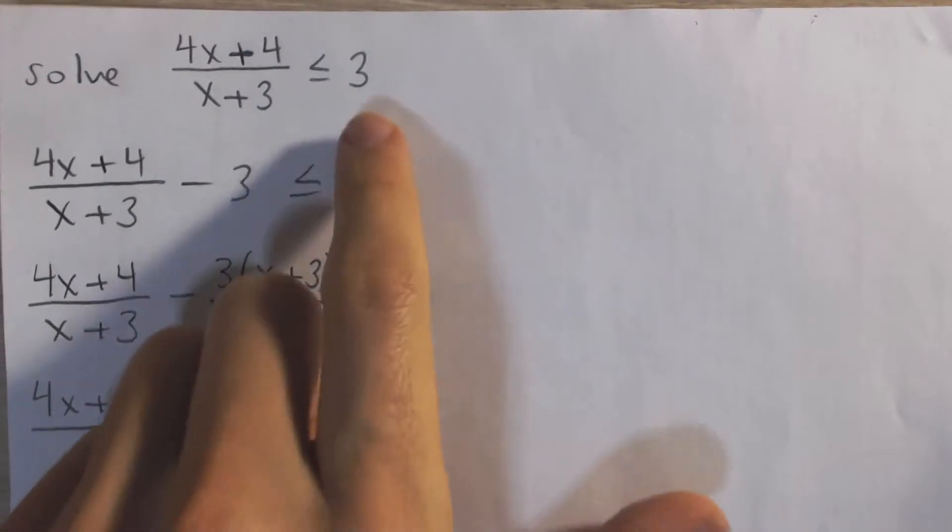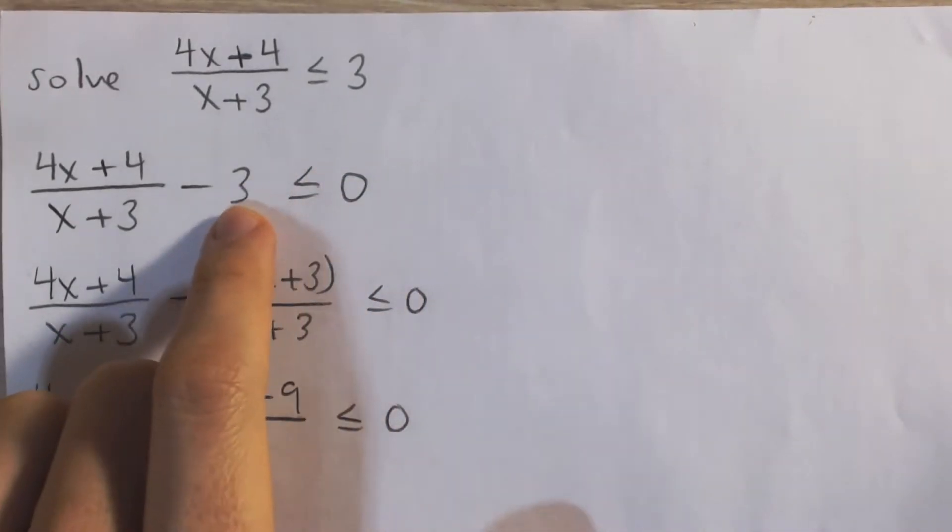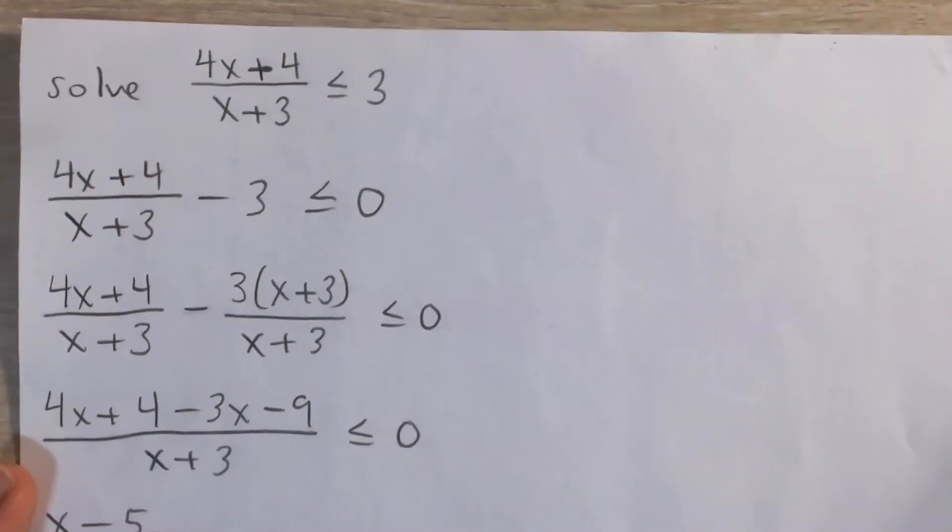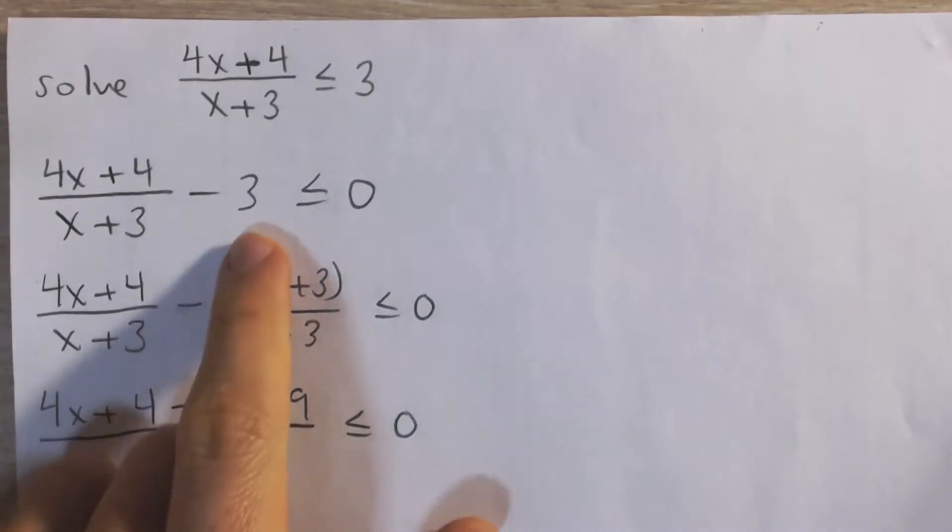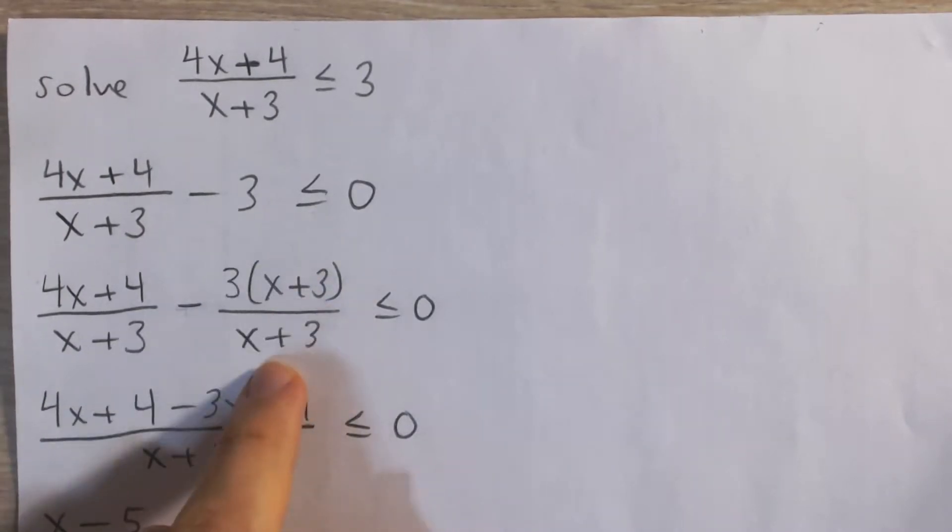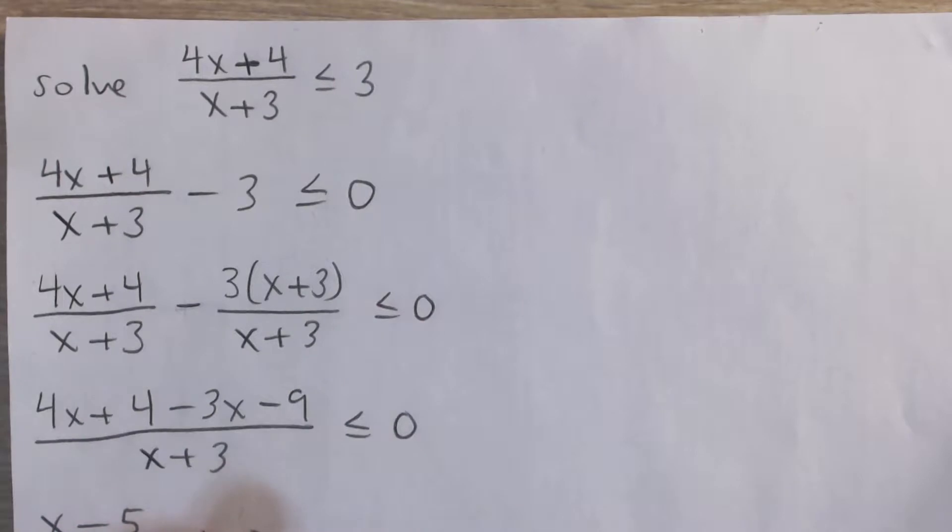So instead, what we're going to do is subtract 3 from both sides, in other words move all the terms to one side, and then we can find a common denominator and combine these two fractions together. So I'm going to multiply this 3 by x plus 3 divided by x plus 3, so multiply and divide by the same thing.